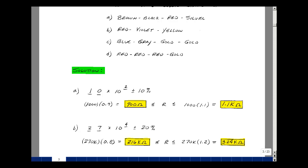So the nominal value here is 27 times 10 to the 4th, and that would be 270 k ohms. Multiply that by 0.8 and 1.2 and you get the range of resistances for our second resistor: 216 k ohms and 324 k ohms.